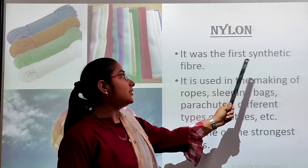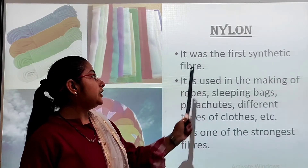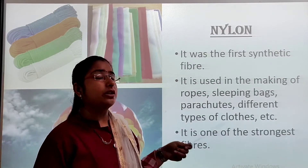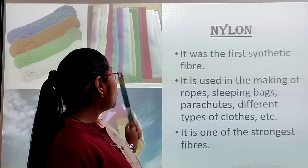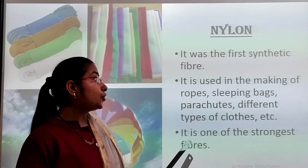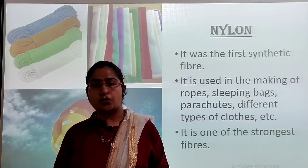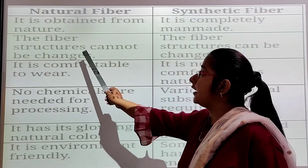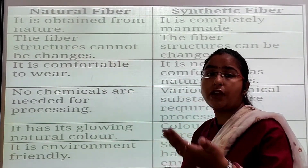Then nylon. Nylon is the first synthetic fiber. It is used in making ropes, sleeping bags, parachutes, and different types of clothes. It is one of the strongest fibers.